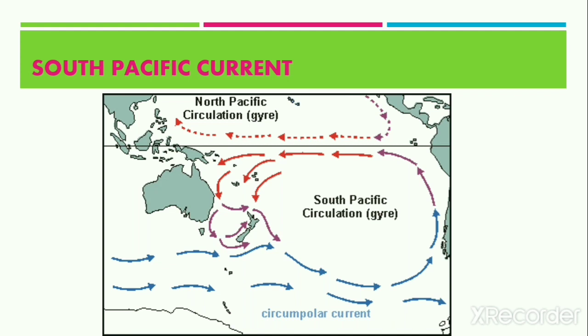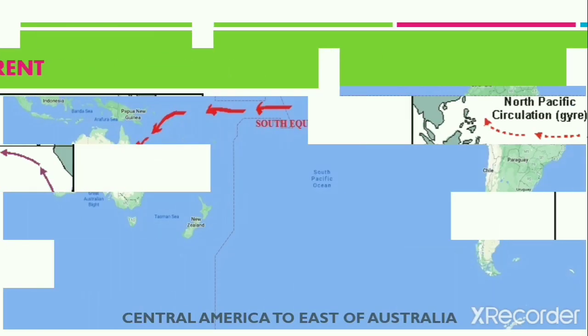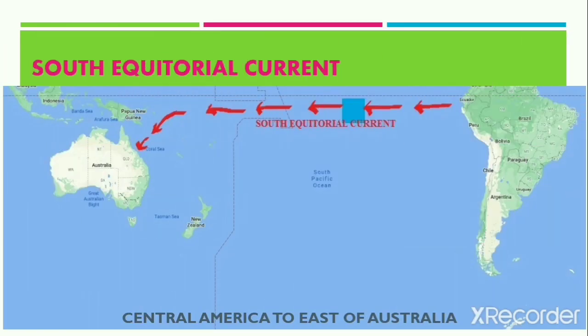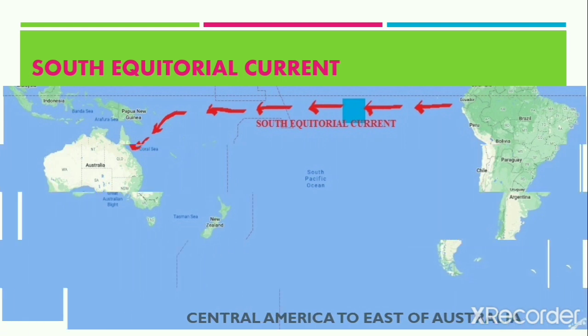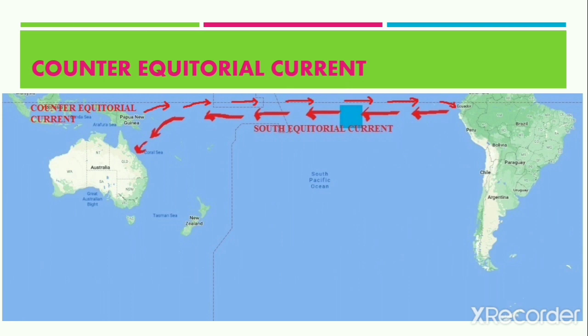Now let's move into the South Pacific Current. The part of the Pacific Current that lies to the south of the equator is termed the South Pacific Current. The South Equatorial Current is a warm current that flows parallel to the equator from the coast of Central America to the eastern coast of Australia. On reaching the eastern coast of Australia, there is a counter-equatorial current to compensate the high volume of water, and thus this counter-equatorial current moves parallel to the equator from the east coast of Australia back to the northern part of South America.